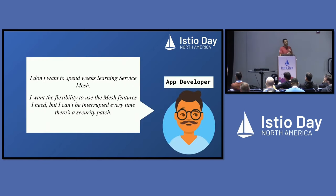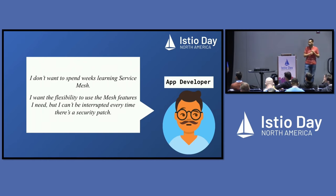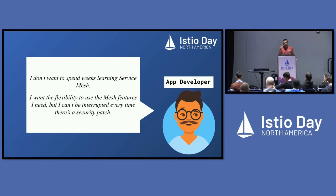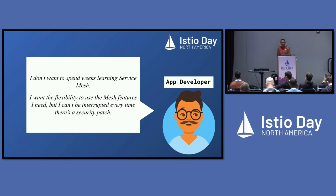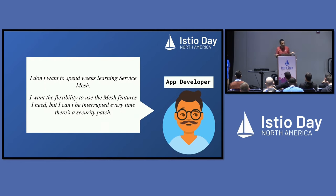The app developer doesn't want to learn service mesh. When Istio first came out, everyone thought developers were going to love it — but it's actually more for the platform engineers. They don't want to learn service mesh, but they want to be able to leverage it and consume everything that service mesh provides. They don't necessarily want to manage it.